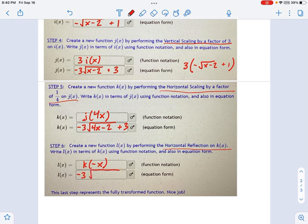So it's negative 3 times the square root of 4 times negative x. I could write it that way. I could say 4 times negative x. I don't need to write it that way. I can just say negative 4x, negative 4x minus 2 plus 3.